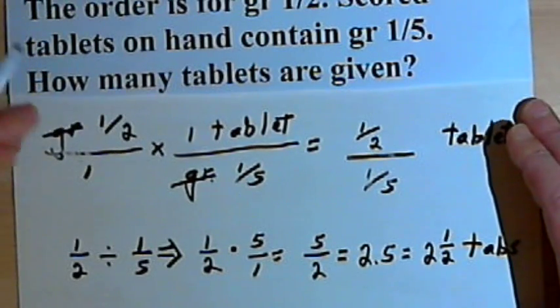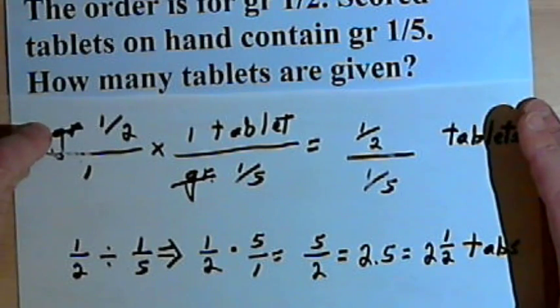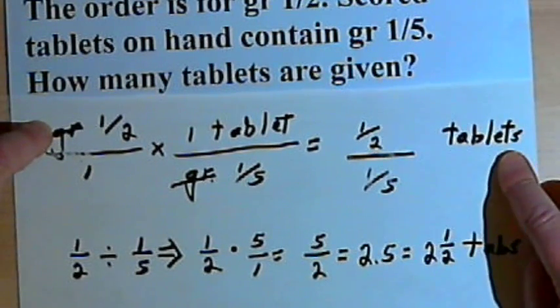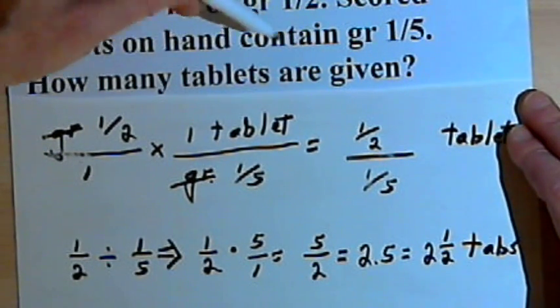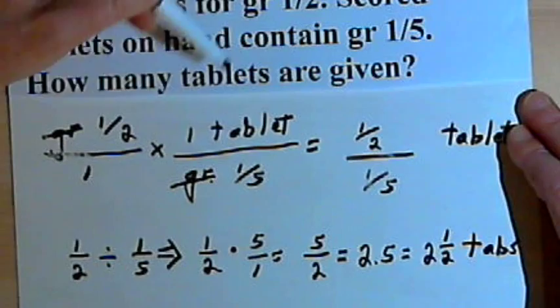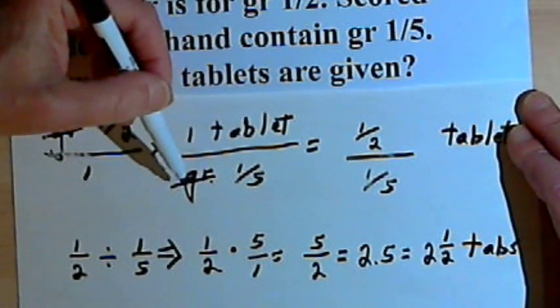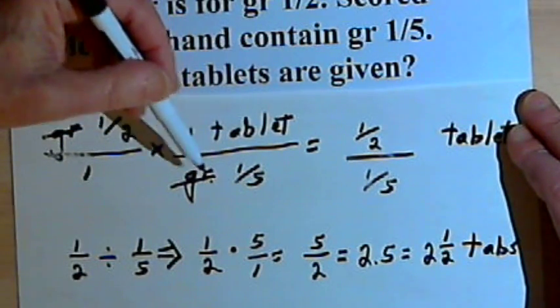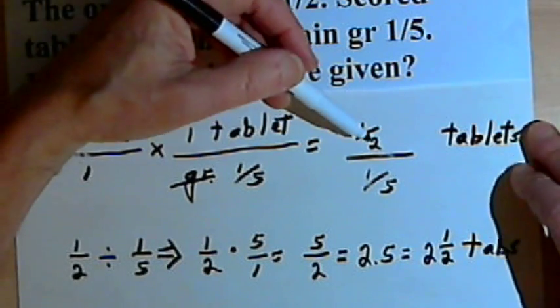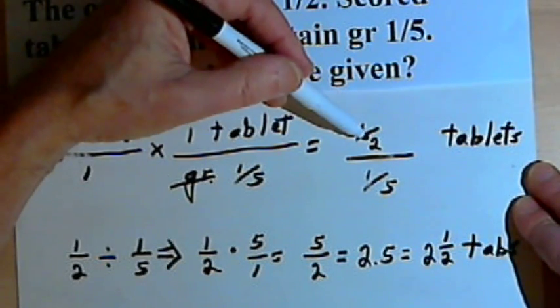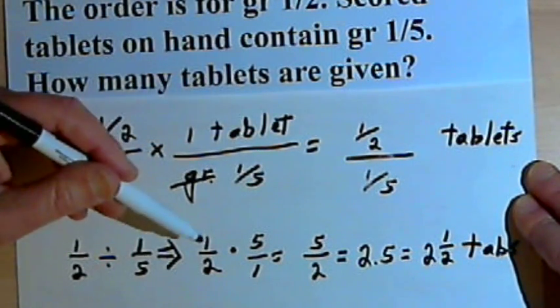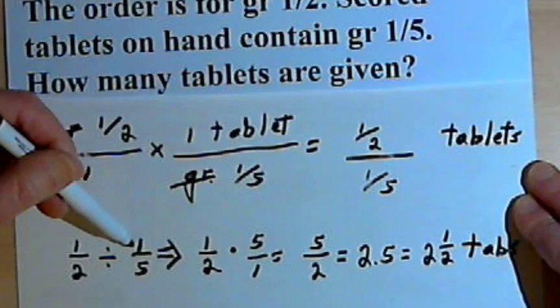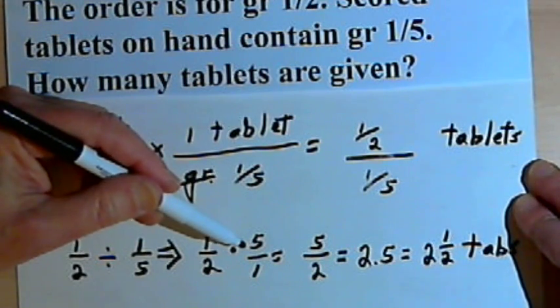So what we did was we took the order and put that first over on the left. We took the units we wanted to end up with and put that on the right. We took the fraction that we have to multiply with, in this case it was one tablet over one-fifth of a grain, and then we do the multiplication. The only thing different about this than a lot of basic problems is that we have to deal with these fractions, and then we use the rules for dealing with fractions,